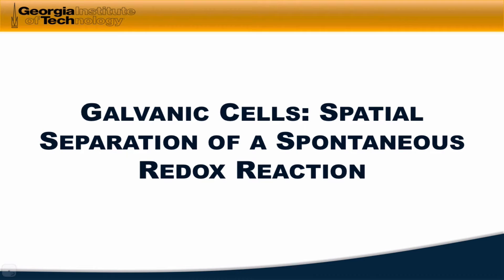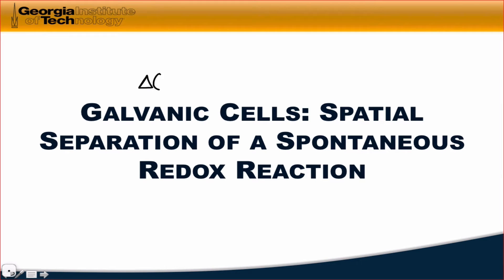In this video, we're going to explore the fascinating device known as the galvanic cell. The purpose of a galvanic cell is to convert chemical energy in the form of a delta G for a chemical reaction — in particular a redox reaction — into a voltage and into a current.